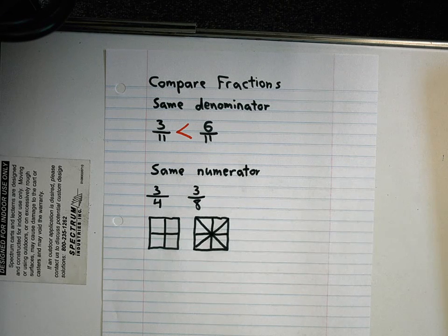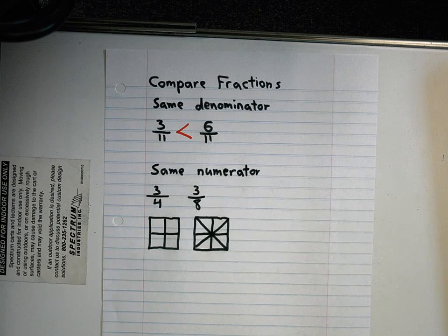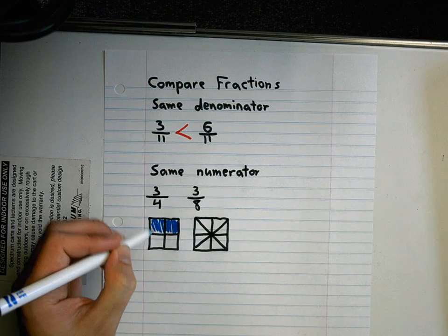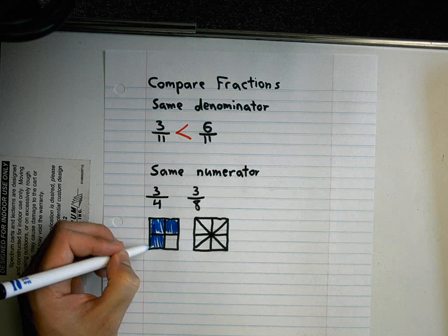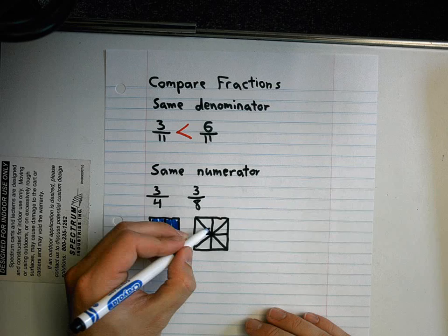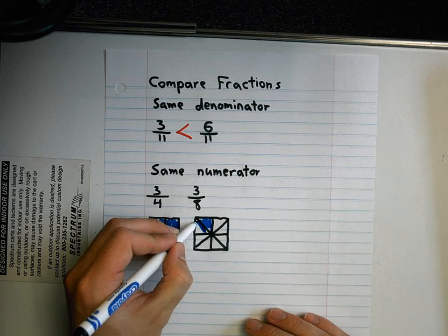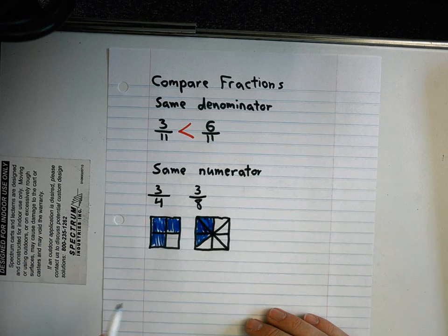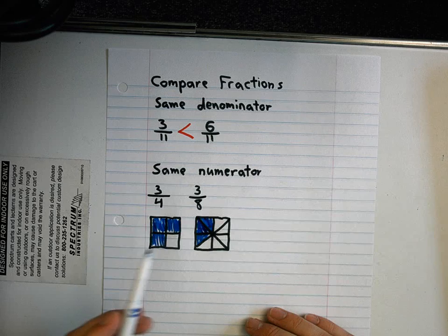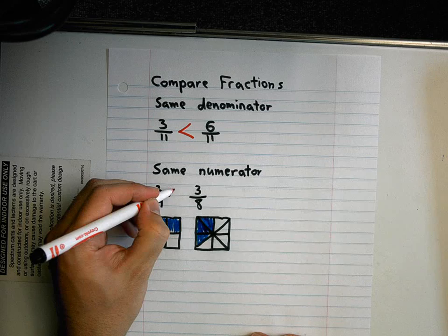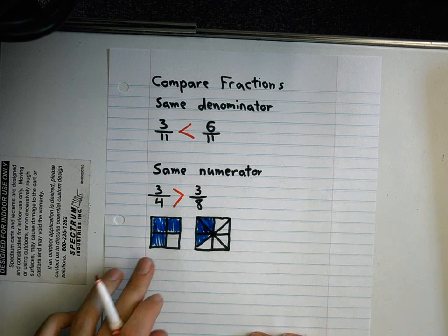Now I'm going to shade in the numerator. So in this top one right here, three fourths, I'm shading in three of those pieces. And then this one I have to shade in three of these pieces too. As you can see, three fourths is much bigger than three eighths. So when the numerators are the same, whichever one has the smaller denominator is the greater fraction.